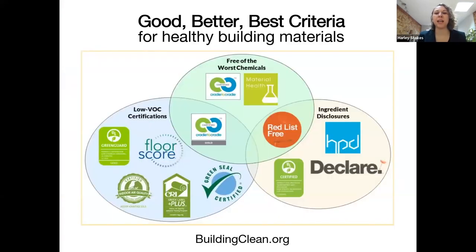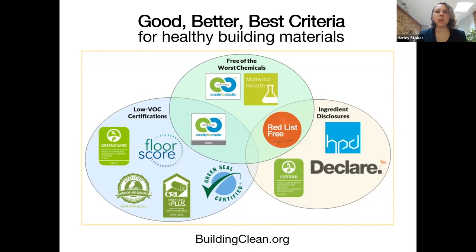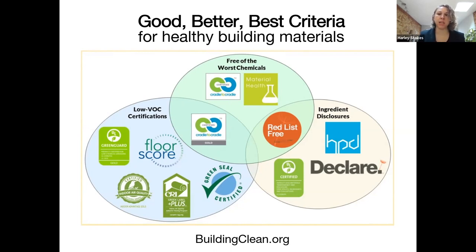The Blue Green Alliance Foundation has a BuildingClean.org website. When advocating for healthy building materials in federal procurement guidance or at the state agency level, I'll often refer to our good, better, best criteria as a way to approach how to eliminate the worst of the toxic building materials. A 'good' certification means product certifications and labels ensure low volatile organic compound emissions. 'Better' is when product certifications and labels limit some of the most hazardous content. And 'best,' of course, is when those certifications and labels are free of the most hazardous content. I encourage you to take a peek at BuildingClean.org to find ways to identify healthy building materials and see where products fall in that criteria.